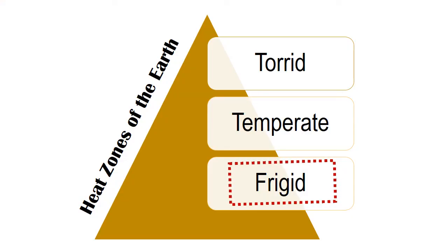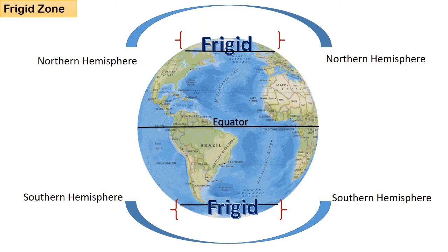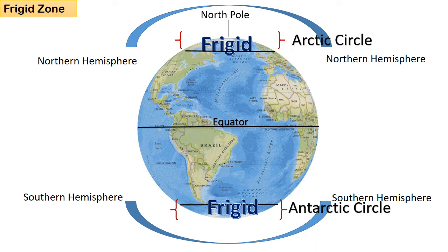Now, we come to the Frigid Zone. The Frigid Zone is also split into two — one between the Arctic Circle and the North Pole, and one between the Antarctic Circle and the South Pole. The Frigid Zones are the coldest regions of Earth and are generally covered in ice and snow. Summer season in these regions lasts for about two to three months and there is almost 24 hours of sunlight during summer. The South Frigid Zone includes only Antarctica.